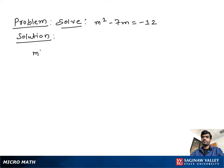Solve m square minus 7m equal to negative 12. So what we do first, we bring the negative 12 on the left side and make 0 on the right side.